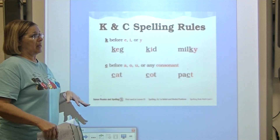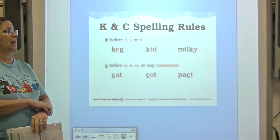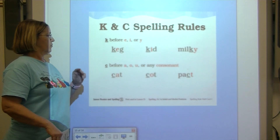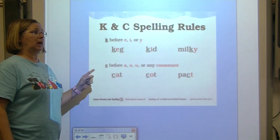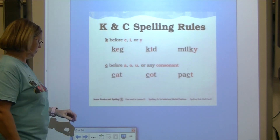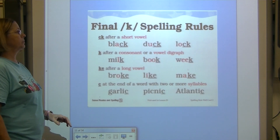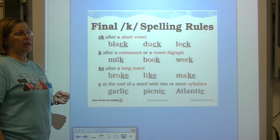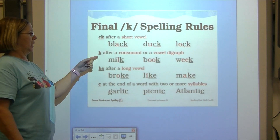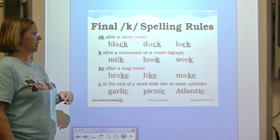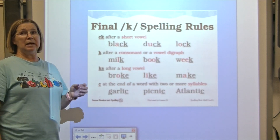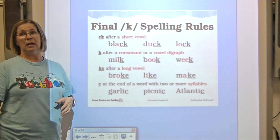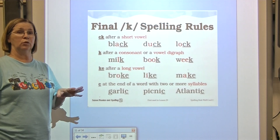When spelling using the letters K and C: we use K before E, I, or Y for the K sound. We use C before A, O, U, or any consonant. When spelling K at the end of a word, we use digraph CK after a short vowel. Plain K comes after a consonant or a vowel digraph. KE comes after a long vowel so that we have sneaky E. And plain C comes at the end of a word with two or more syllables.